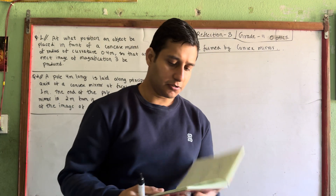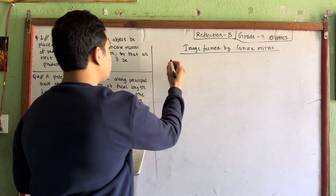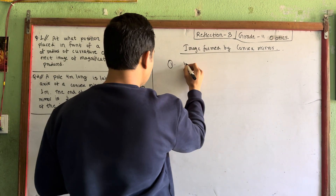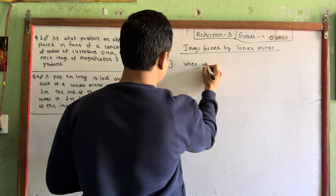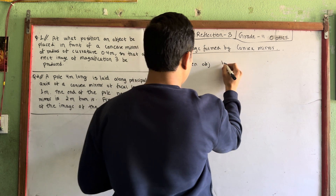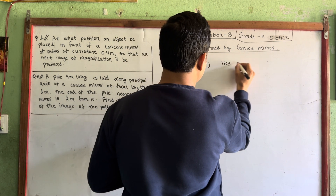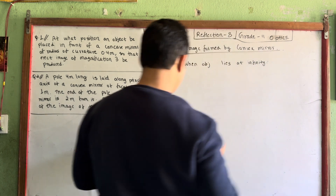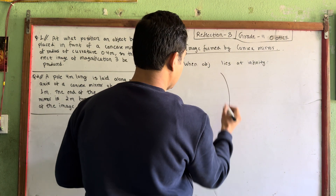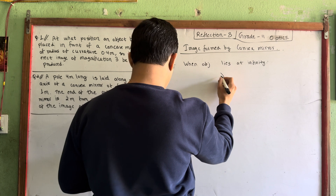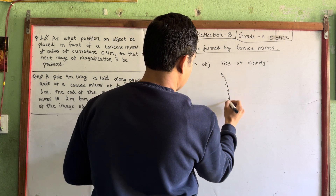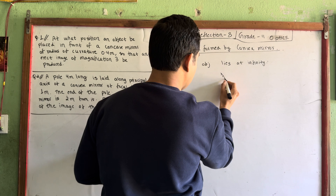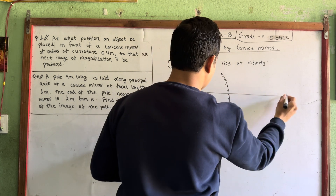For a convex mirror, when the object lies at infinity, the image is formed. When the object is at infinity, the convex mirror forms the image at the focus.